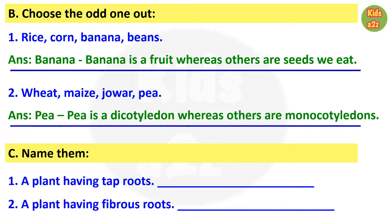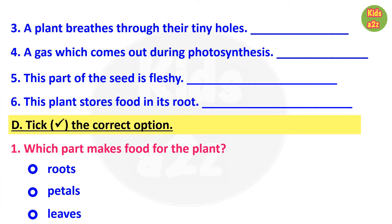For question C, kids need to write the names of the following. Number one: a plant having tap roots — answer is neem tree. Number two: a plant having fibrous roots — answer is grass. Number three: a plant breathes through their tiny holes — answer is stomata.